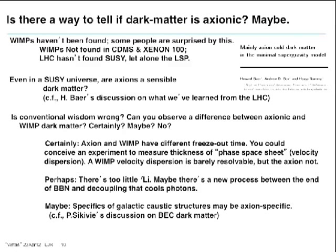In the 'certainly' department: axions and WIMPs have different freeze-out times, they have different velocity dispersions. You can conceive of experiments where you lens off a dark matter structure — the width of that structure is different if you have WIMPs versus axions. Axions are incredibly sharp; their velocity dispersion when cold is so incredibly tiny you will never be able to measure it. The answer is certainly, and it's barely at the fringes of being resolvable in some scenario.